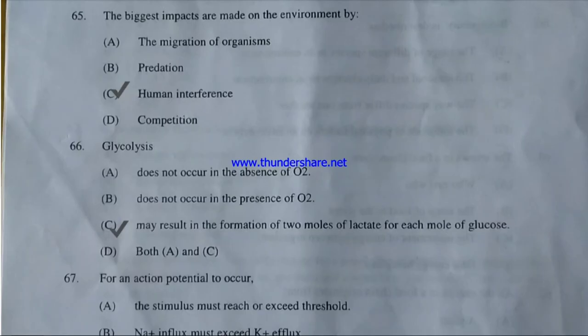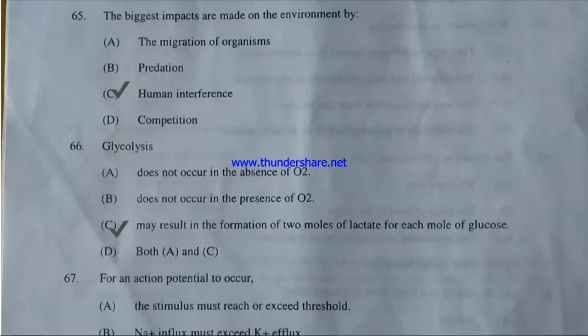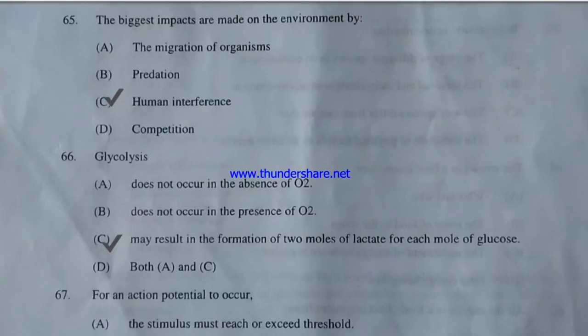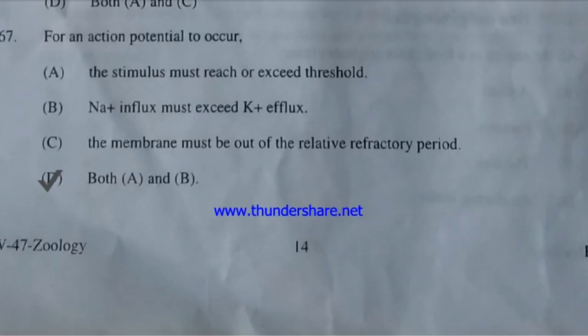The biggest impacts are made on the environment by — migration of organisms, predation, or human interference? The correct answer is C — human interference. Glycolysis — does not occur in absence of O₂, does not occur in presence of O₂, may result in formation of two moles of lactate per mole of glucose, or both A and C? The correct answer is option D — both A and C. For an action potential to occur, the stimulus must reach or exceed threshold and Na⁺ influx must exceed K⁺ influx — both A and B are correct.